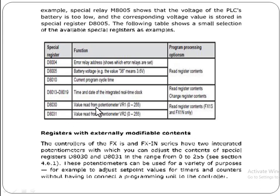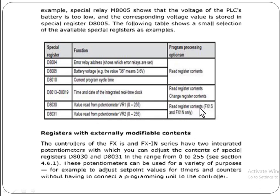D8030 is used to read the value from potentiometer Vr1, and D8031 is also used to read the value from potentiometer Vr2. Both D8030 and D8031 are used to read register contents — D8030 reads from potentiometer 1 and D8031 reads from potentiometer 2.